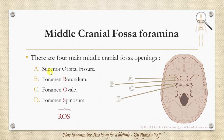Now we've talked about structures passing through the superior orbital fissure. The next foramen in the middle cranial fossa is the foramen rotundum, which transmits the maxillary nerve branch of the trigeminal nerve. We'll have a mnemonic about that in the cranial nerves lectures in the next section.